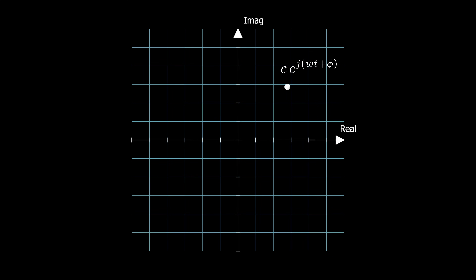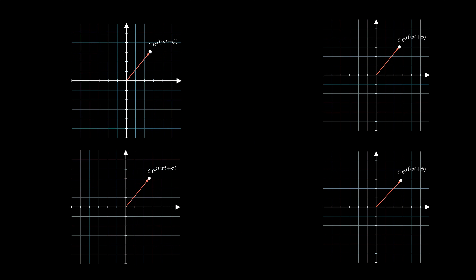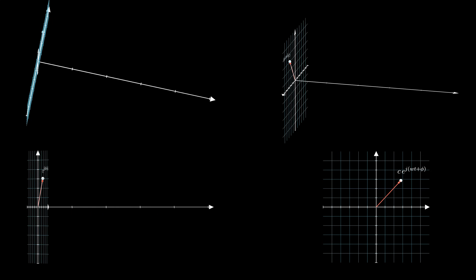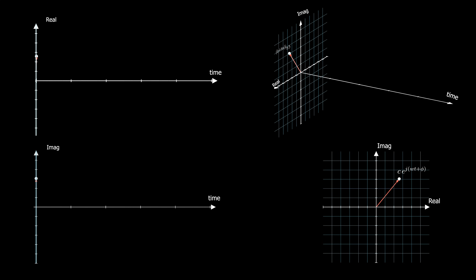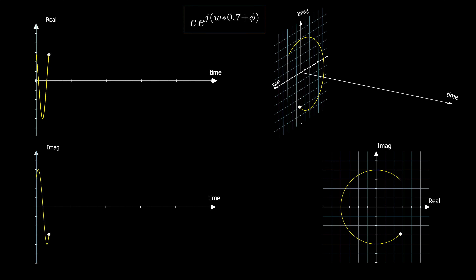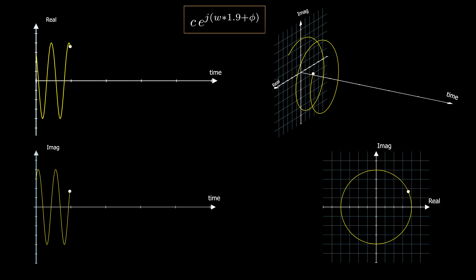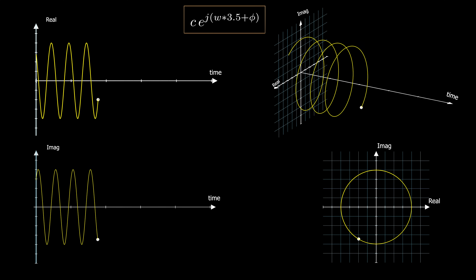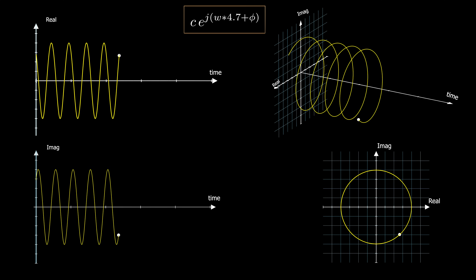At each point of time, the complex exponential function describes a point in a complex plane with magnitude c and phase theta, where theta equals omega t plus phi, and phi is the phase. At t equals zero, theta equals phi, and as time goes on we rotate around the circle with radius c, where omega is the speed of rotation. So the complex exponential is a function that moves in circular motion with angular frequency omega — the higher the omega, the higher the rotational speed.